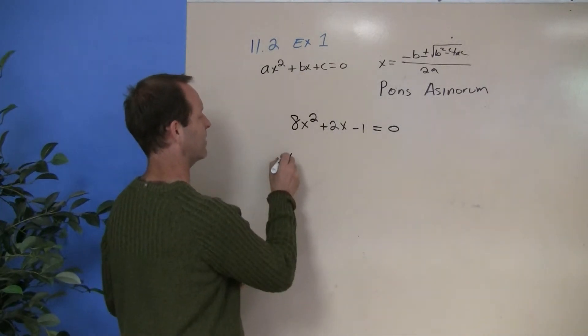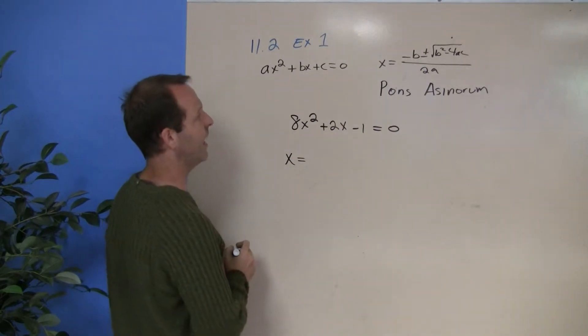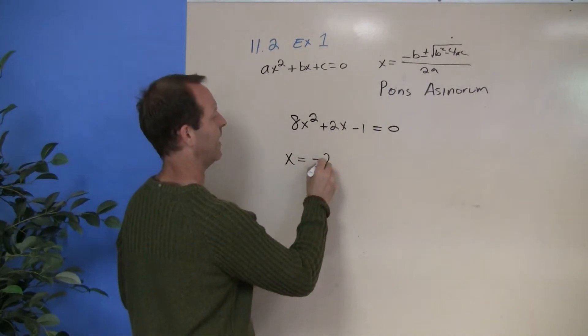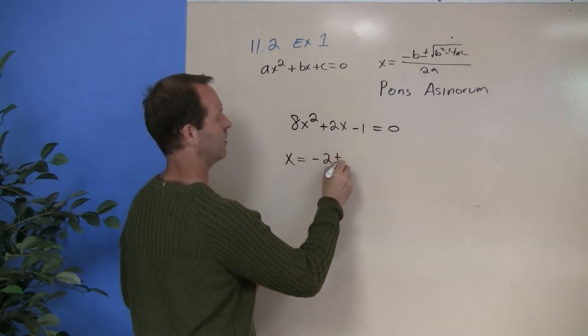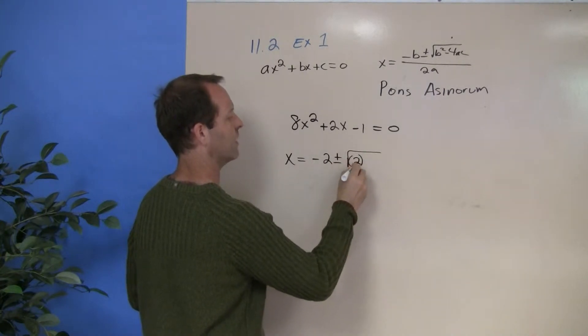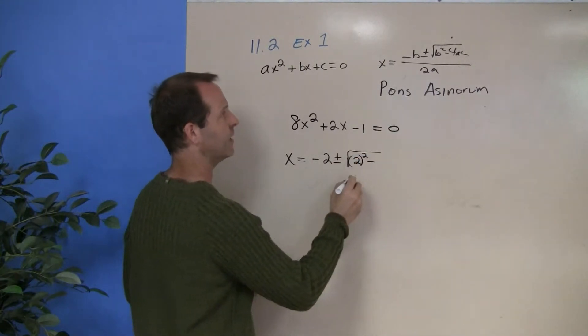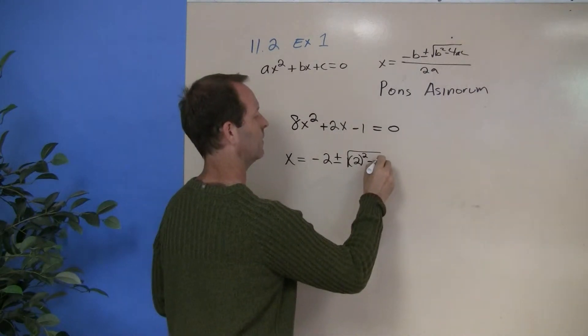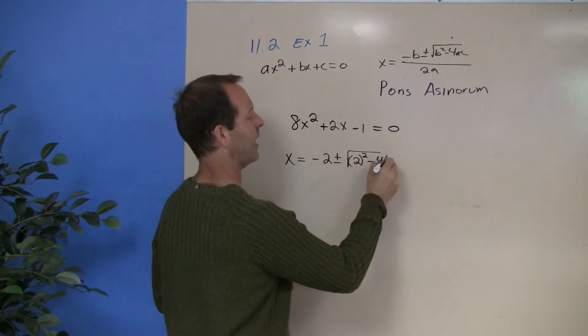All right, so we have x equals negative B, negative 2, plus or minus B squared, which in this case is a 2, minus 4 times my A, which is 8.